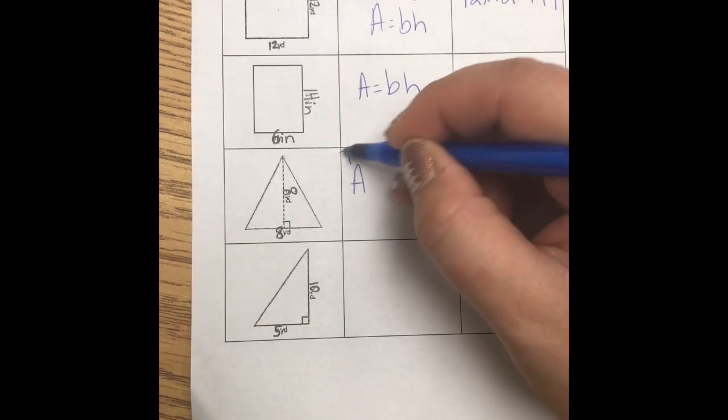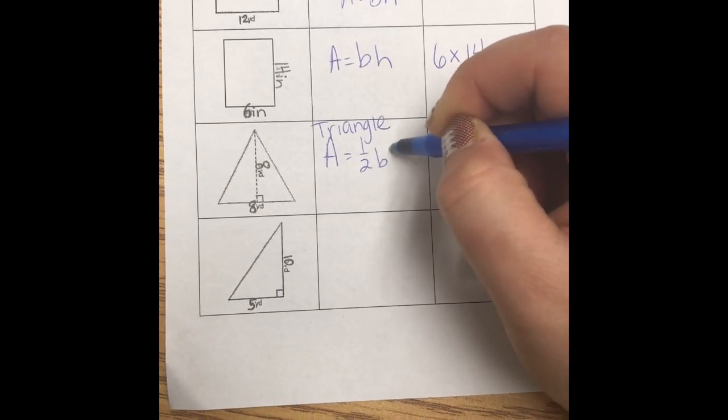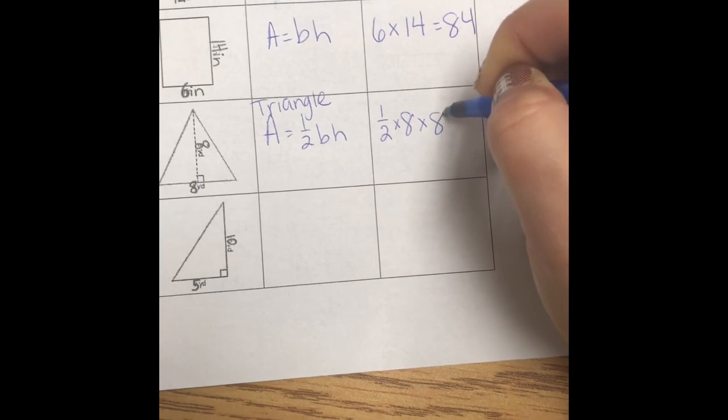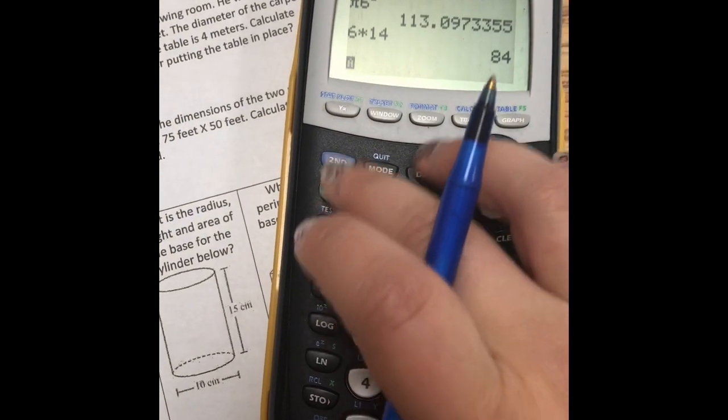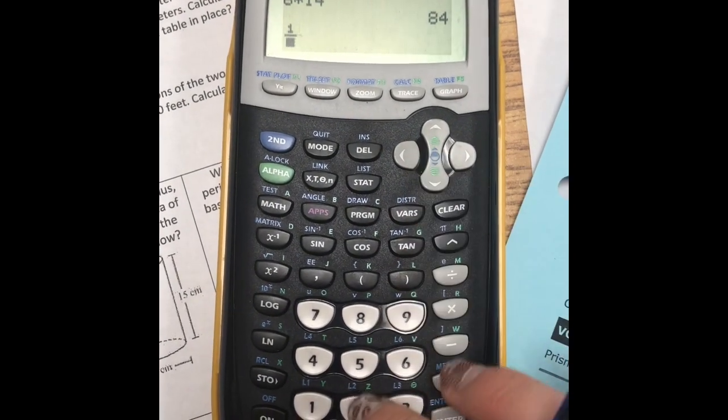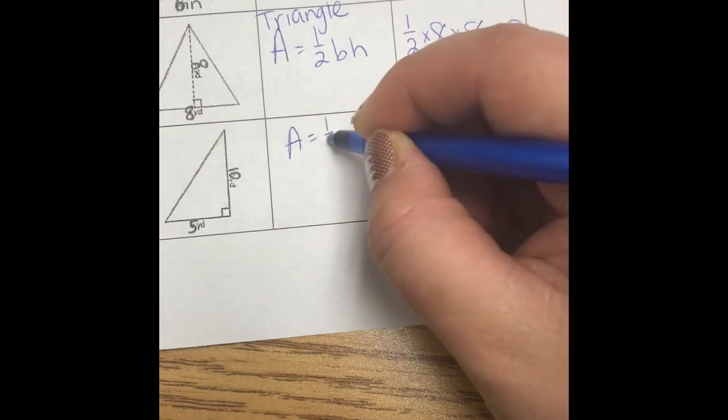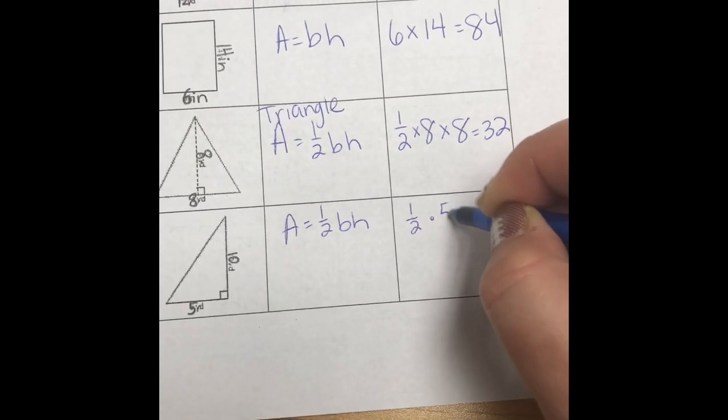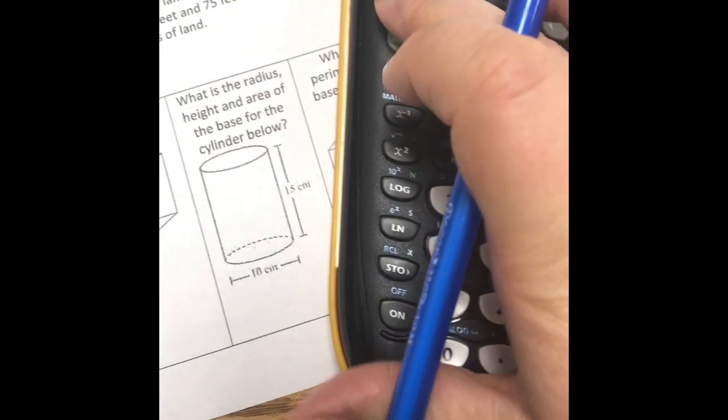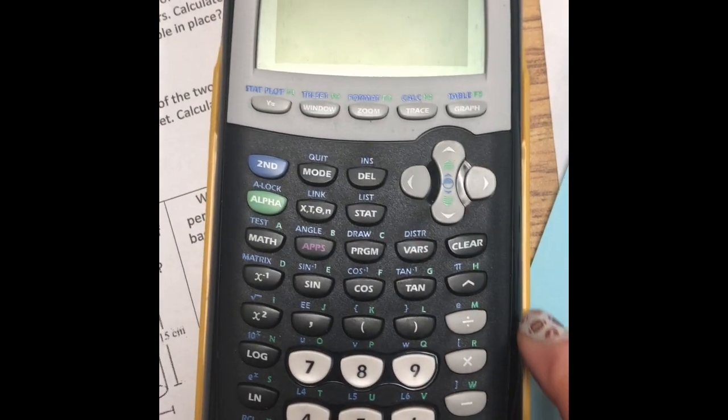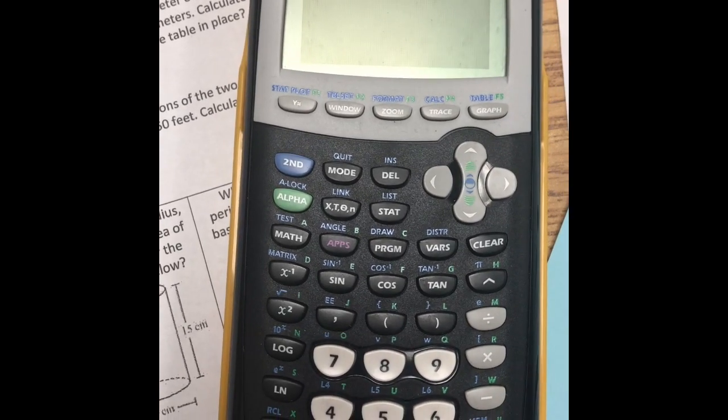This next shape is a triangle. So I would use the formula A equals 1 half b h. And I'd plug in my numbers. 1 half times the base length times the height. So I use my calculator. We need our fraction menu. Alpha y equals 1 half times the base. And then again, this is a triangle. 1 half b h. Using my calculator. Let me plug in my numbers first. 1 half times the base times the height. Alpha y equals 1 half times the base times the height. Gives me 25.